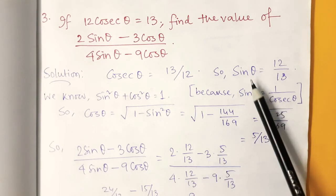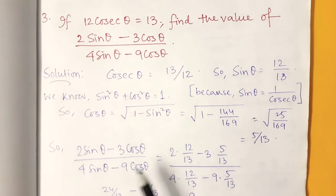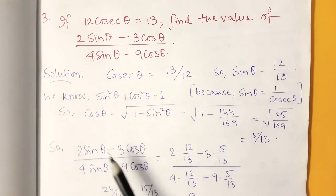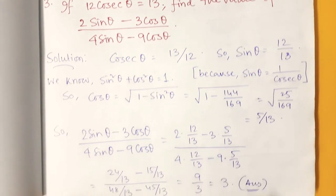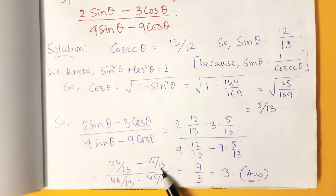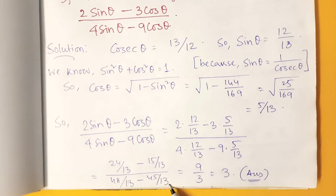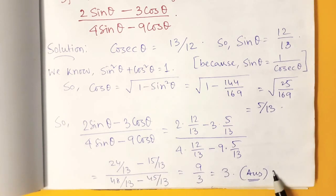Now we have the values of sin θ and cos θ. Just put the values into the expression. After doing the calculation, we get 24 by 13 minus 15 by 13, and 48 by 13 minus 45 by 13. Doing this calculation, the answer is 3.